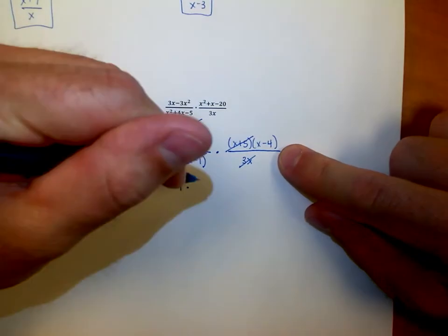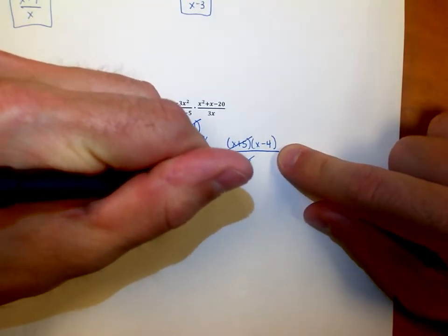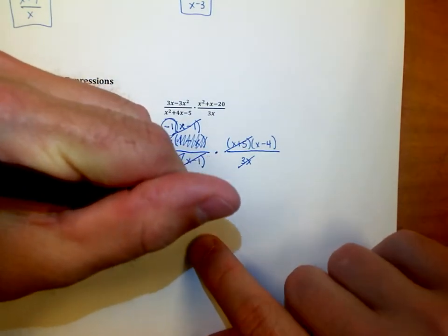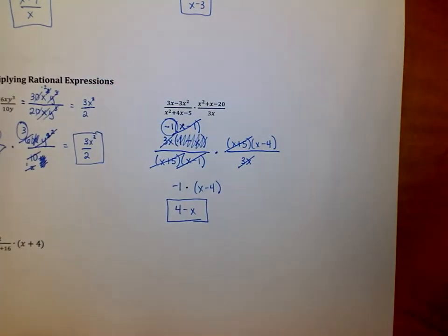Times the second fraction, which only has (x - 4). Now if I distribute that out, that leaves me with 4 - x, and that is the simplified form of that fraction.